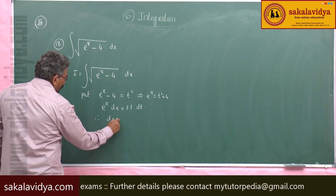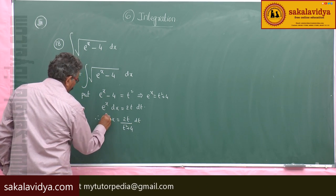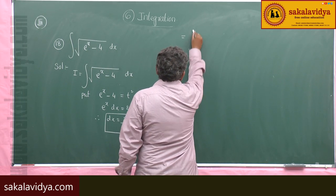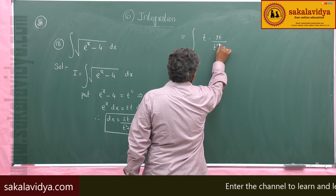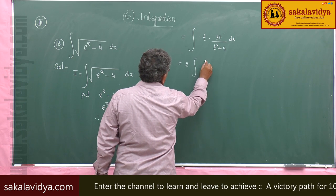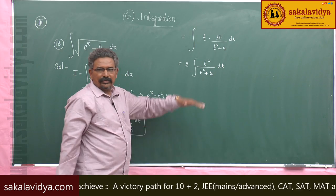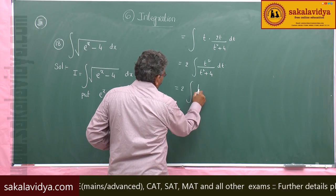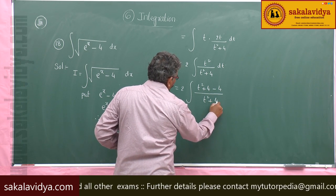Therefore dx equals 2t by (t squared plus 4) dt. Substituting, the integral becomes integral of t times 2t by (t squared plus 4) dt, which gives 2 times integral of t squared by (t squared plus 4) dt. In the numerator, add and subtract 4: integral of (t squared plus 4 minus 4) by (t squared plus 4) dt.